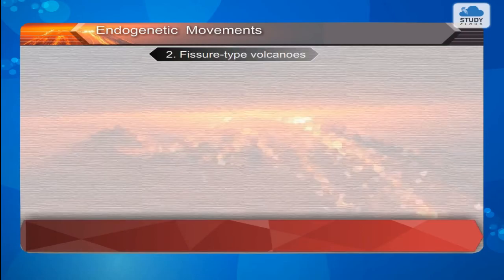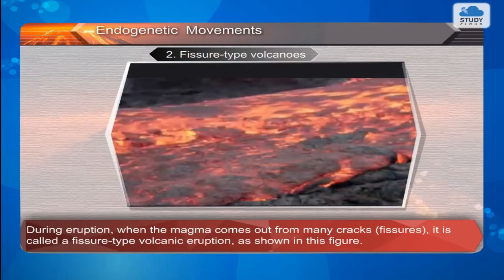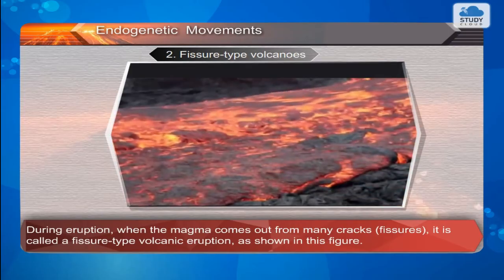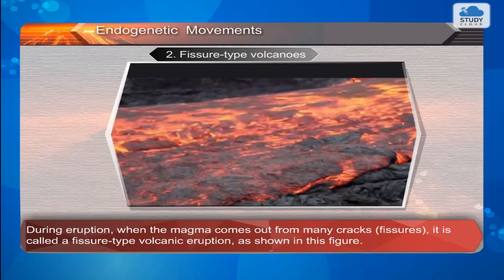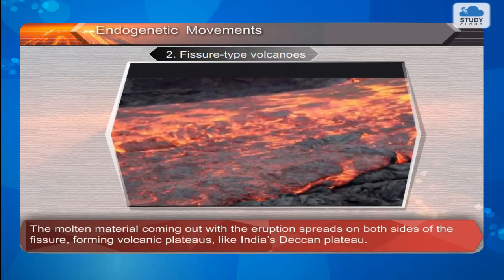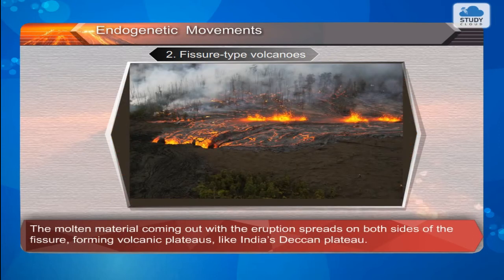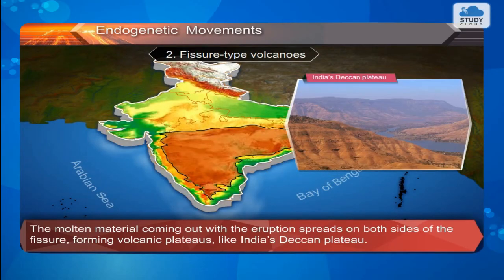Fissure type volcanoes: During eruption, when the magma comes out from many cracks and fissures, it is called a fissure type volcanic eruption, as shown in this figure. The molten material coming out with the eruption spreads on both sides of the fissure, forming volcanic plateaus like India's Deccan Plateau.